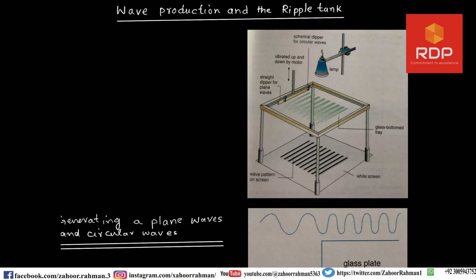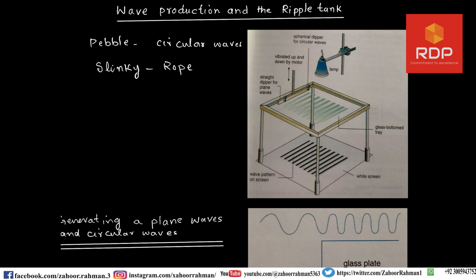Now let us talk about wave production and the ripple tank. We can observe waves produced in a pond by throwing a pebble — in that case we observe circular waves. We can also observe waves in the slinky or rope — those are straight waves.